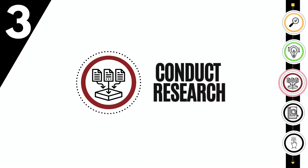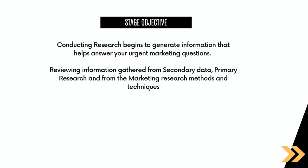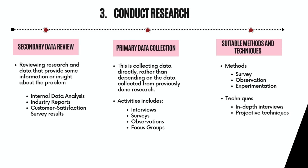Stage 3: Conduct Research. Conducting research begins to generate information that helps answer your urgent marketing questions, by reviewing information gathered from secondary data, primary research, and from marketing research methods and techniques. This is the stage where you will review all gathered information from both secondary and primary research. The most common methods include the survey, known as the questionnaire method, which refers to all methods of obtaining the needed information through asking questions to the respondents.